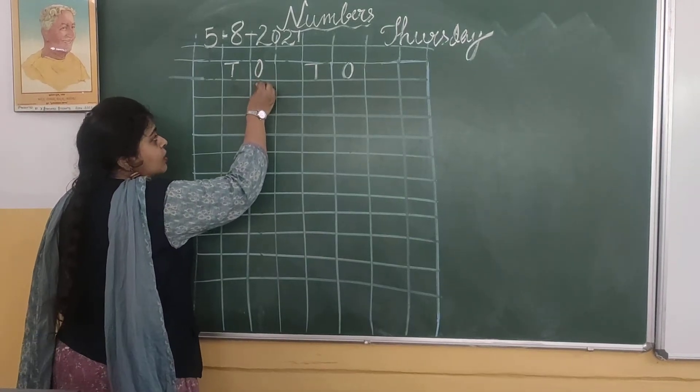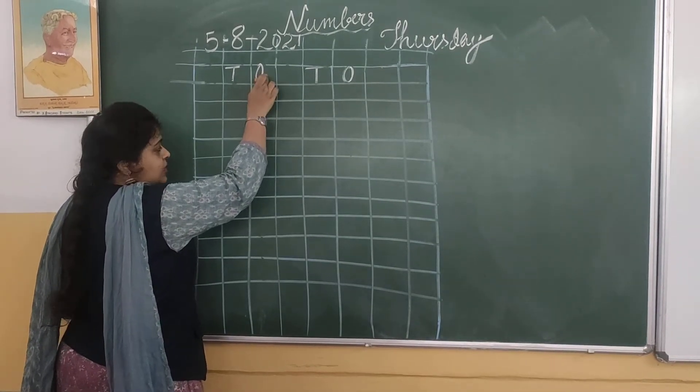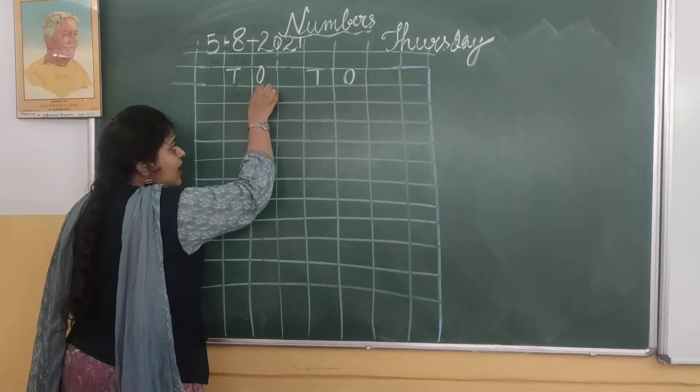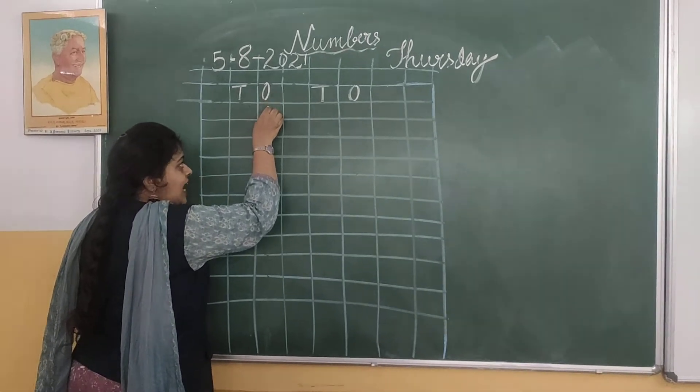You should write below O. O is the ones place. Write number 1. You can write 1 as a standing line.